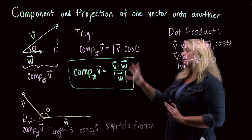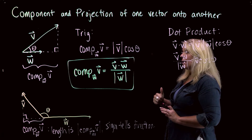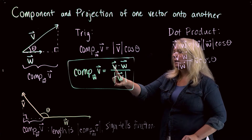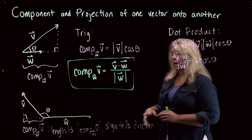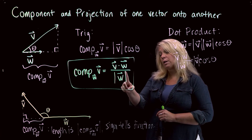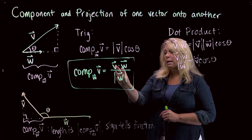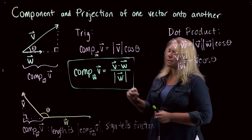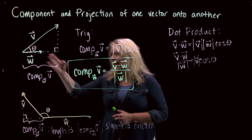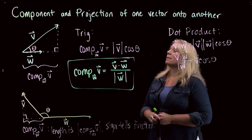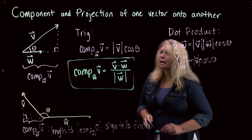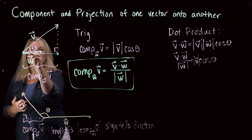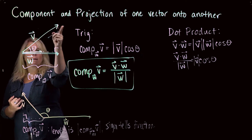This component of one vector along another is a scalar quantity — the dot product gives a scalar, and dividing by a magnitude also gives a scalar, so this quantity is just a number, possibly positive or negative. Sometimes what I want is not just a number, but a vector that is along W — that's what we call the projection of one vector onto another.